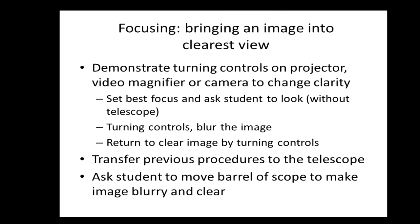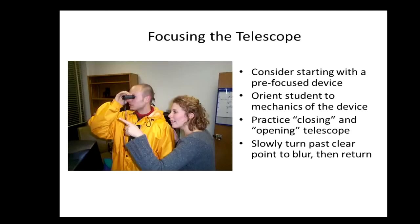You'll then want to start with a pre-focused telescope, making sure the student has that immediate success. With barrel type telescopes, we use the terms open and closed. When it's closed — all the way short — that's typically for seeing something farther away. When the student opens the telescope, making it long, they're pulling in a mid-range task. Getting that hand movement down quickly helps the student feel more comfortable as they use the tool.